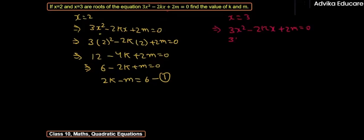If we put the value 3, we get 3² - 2k(3) + 2m = 0. So it will be 9 into 3 is 27, minus 6k plus 2m equals 0.